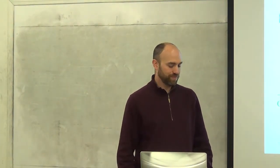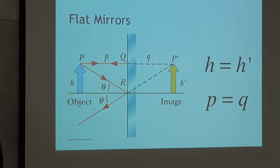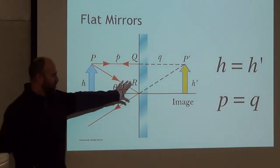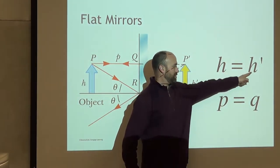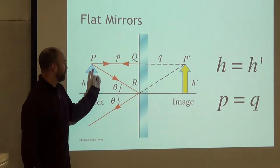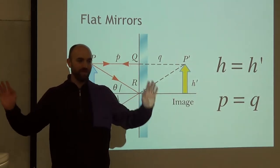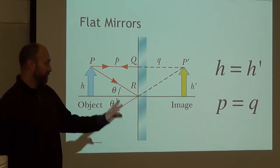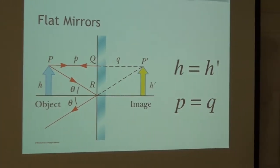First type: flat mirrors — we've already talked about this. It's really straightforward. However tall your object is, that's how tall your image will be: h equals h-prime, object and image are the same height, always. However far your object is from the mirror, that's how far your image is from the mirror — always, every time. Flat mirrors are straightforward, so you need to remember these two rules.